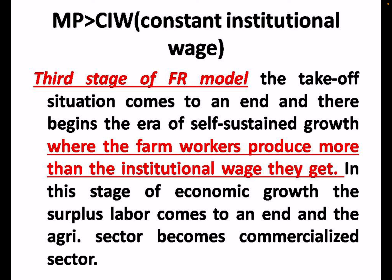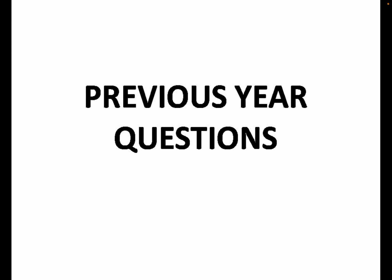The third stage of the Fei-Ranis model is the take-off situation. This stage begins the era of self-sustained growth, where farm workers produce more than the institutional wage — productivity exceeds the institutional wage. In this stage, the surplus labour comes to an end and the agriculture sector becomes commercialized.